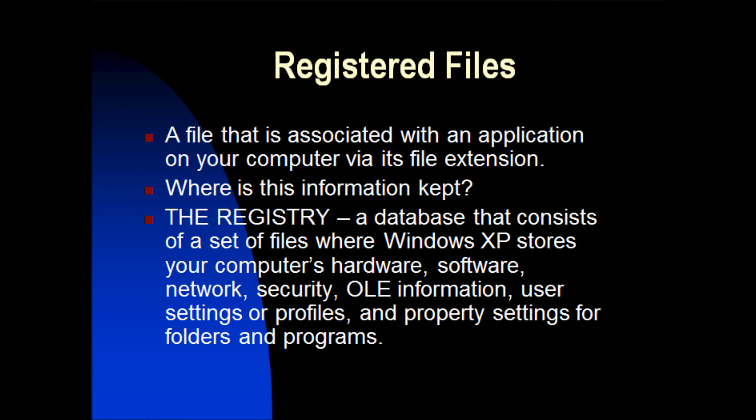Registered files. A file that is associated with an application on your computer via its file extension is known as a registered file. Where is this information kept? In the registry — a database consisting of a set of files where Windows XP stores your computer's hardware, software, network, security, OLE information, user settings or profiles, and properties settings for folders and programs.